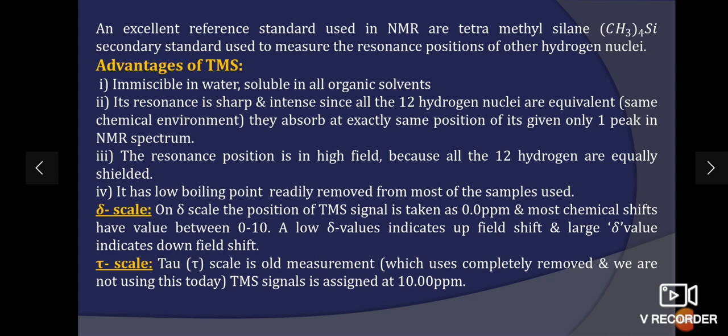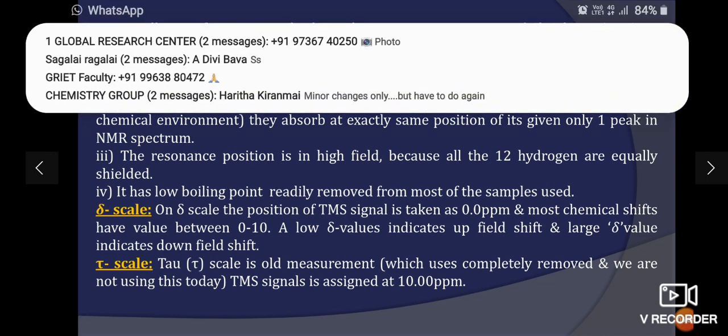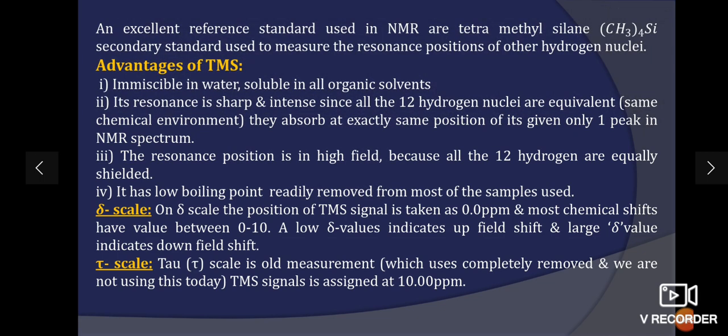A low del value indicates upfield shift and large del value indicates downfield shift. Whereas in DOW scale, it is old measurement which is completely removed and we are not using this today. TMS signal is assigned at 10 ppm.